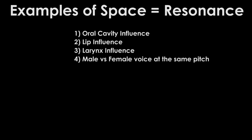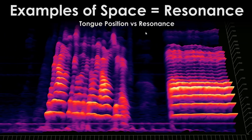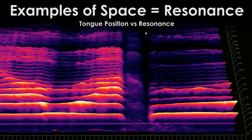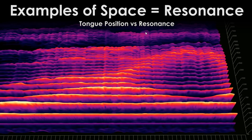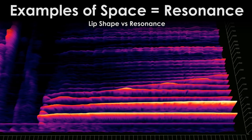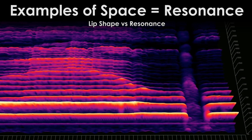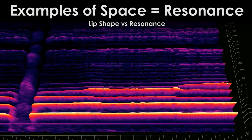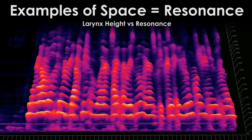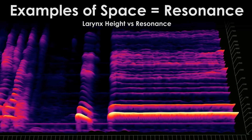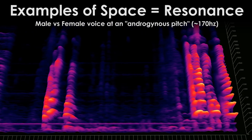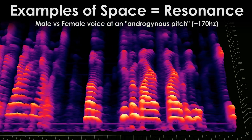Let's take a look at some more examples of resonance in action: the way vowels behave, the influence of the lips, and the reduction of larynx height by raising the larynx, which creates a uniform change in resonance. And lastly, a comparison of male versus female voice: 'Heat from fire, fire from heat.'